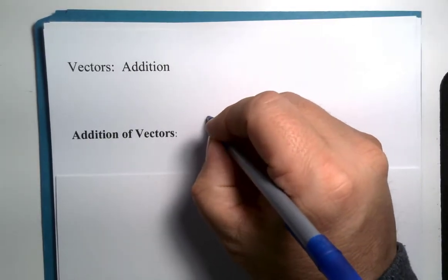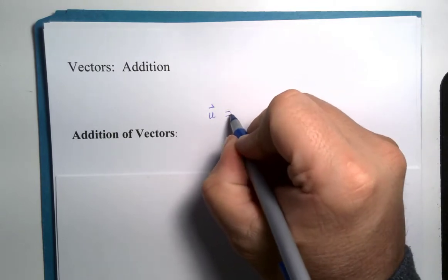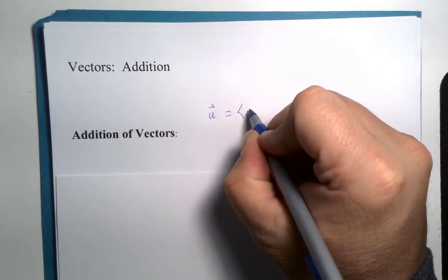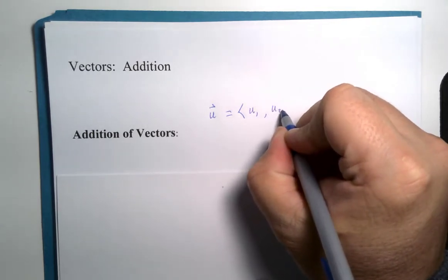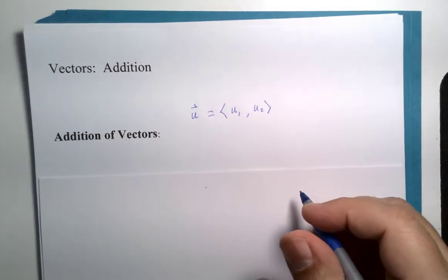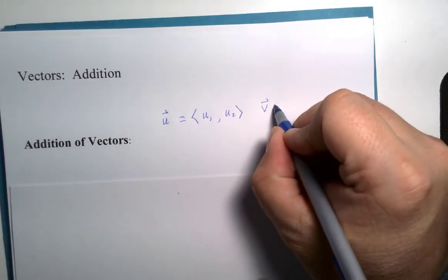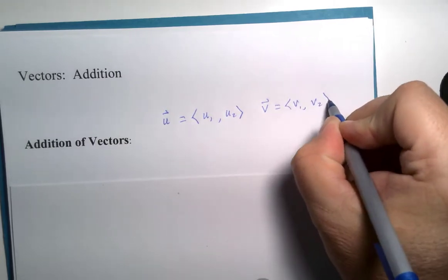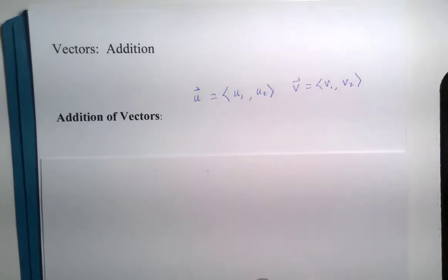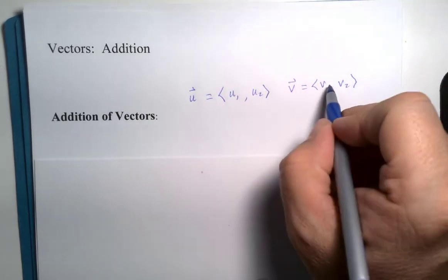Here's the concept. If you have a vector u, again two-dimensional for these examples right now, it has two components. If vector v has two components, we'll call it v1 and v2, then if we're giving the numerical form of the vectors...